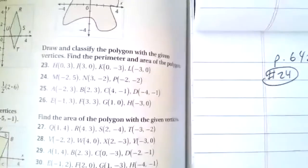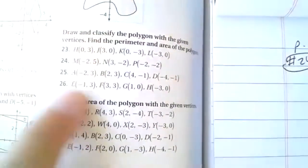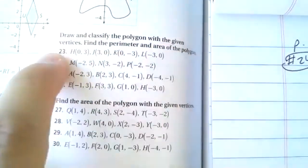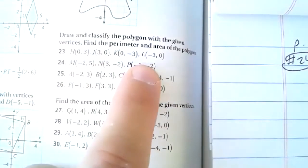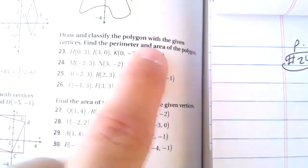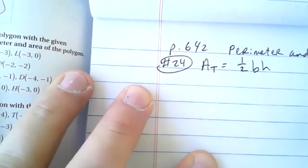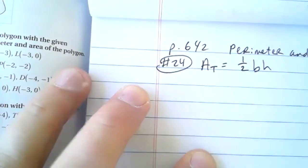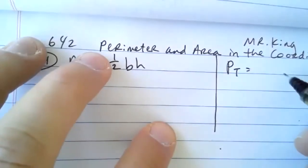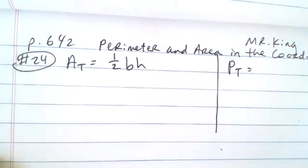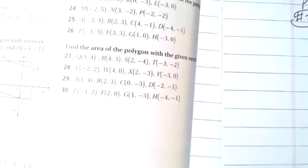Number 24 says: draw and classify the polygon with given vertices. There are three points, so that means it's a triangle. We need to find the perimeter and area of the triangle. The area of a triangle is one-half base times height, and the perimeter is all the side lengths added together. We'll need to use the distance formula, the Pythagorean theorem, and related concepts.